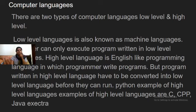But it is very difficult to write low level languages. So high level language is actually used for writing programs. High level language is a programming language in which programmers write programs. But programs written in high level language have to be converted into low level language before they can run.